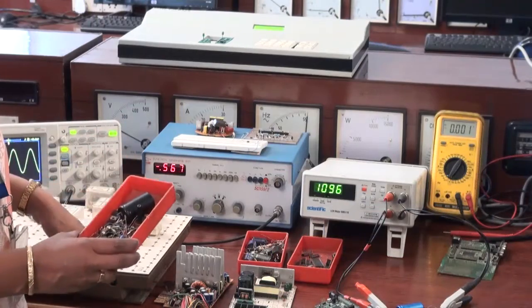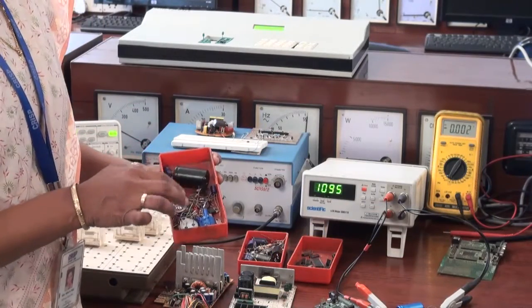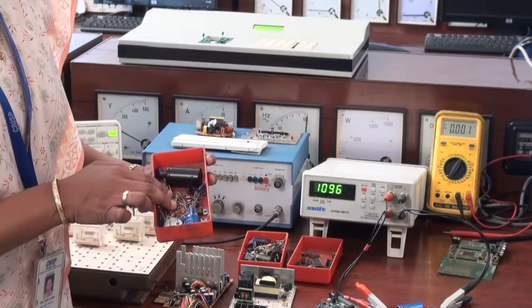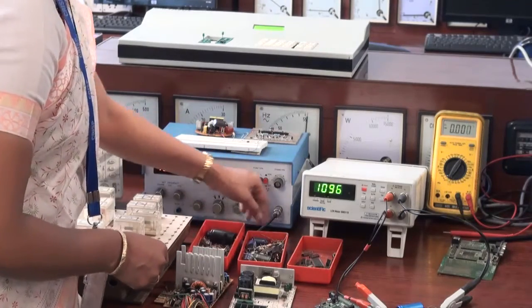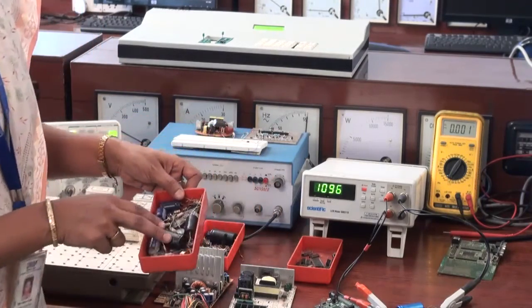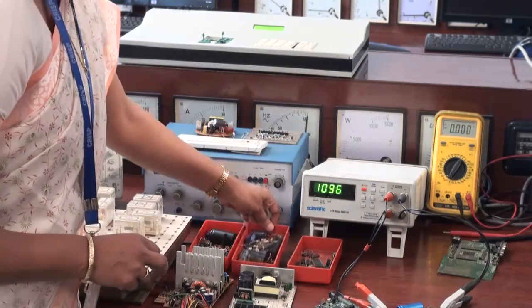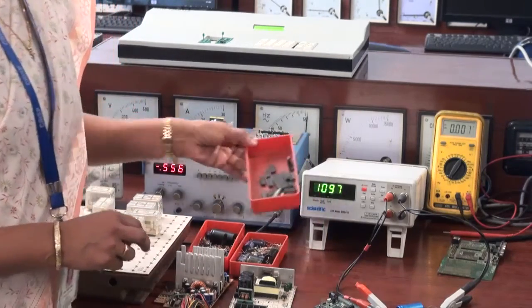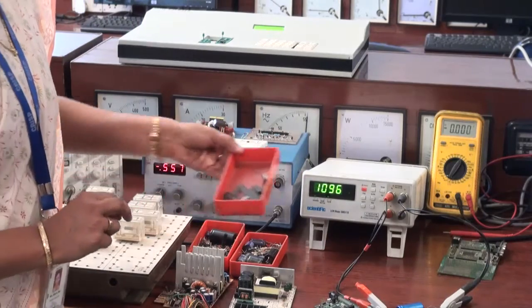Apart from trainer boards, we use actual discrete electronic components also. All these components can be connected to these test and measuring instruments and we can check the status of these components, that is whether it is faulty or if it is working properly.